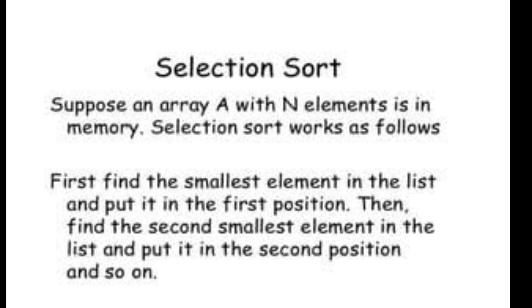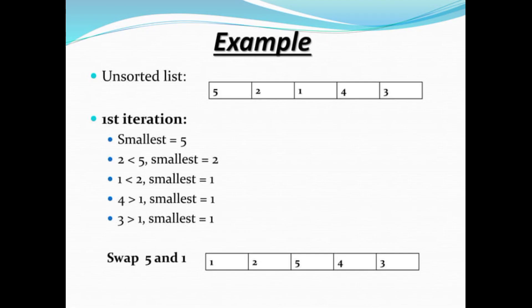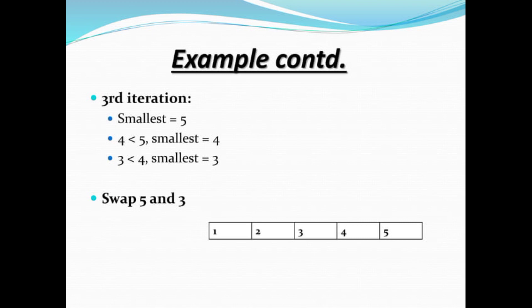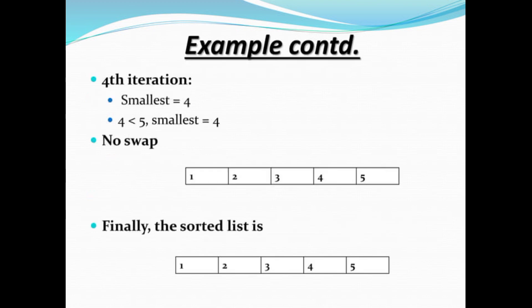We will see an example of ascending order today. First of all we look for the smallest element and it is shifted to the first position, and this repeats until the entire array is sorted. In the first iteration the smallest value is found, compared, and shifted. In the second iteration the next smallest value is found, and in the third iteration we find the smallest from the remaining elements.